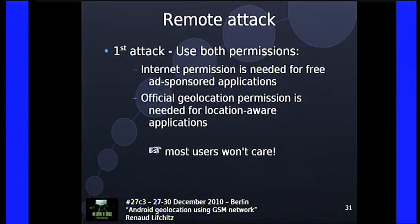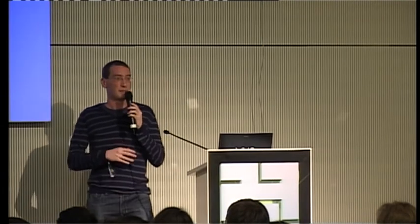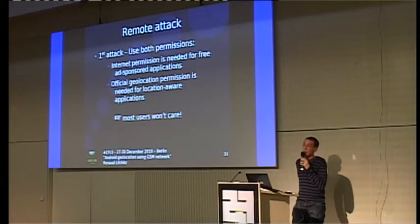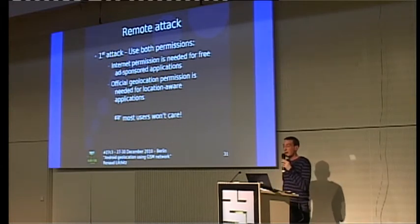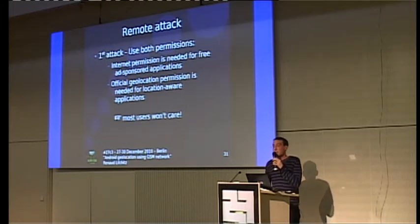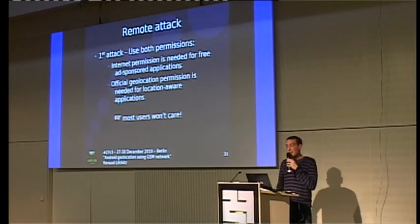First attack: use both permissions. Most users don't look at permissions and will install a game using location and internet permissions even if the game isn't related. Internet permission is common in free ad-sponsored apps, and geolocation permission is common in location-aware apps. So most users won't care — this is the first naive attack.